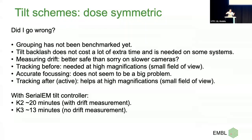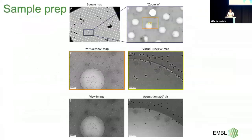Tracking at higher magnifications: you really need to track, or we should get larger cameras or a better stage — the root cause is we have a bad stage and can't just tilt and shoot. Accurate focusing: I think I have to drop that now, or at least benchmark it first. It's always difficult to take something out without controlling everything — if the sample was bad I'd be blamed. Active tracking after: taking a trial image after your record image before tilting helped a lot. With SerialEM, tilt series on K2 are now about 20–25 minutes, and on K3 about 13 minutes.